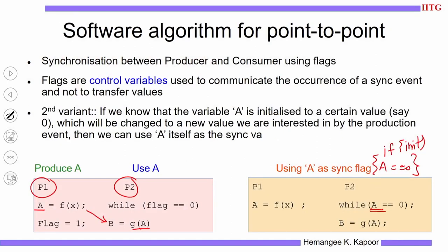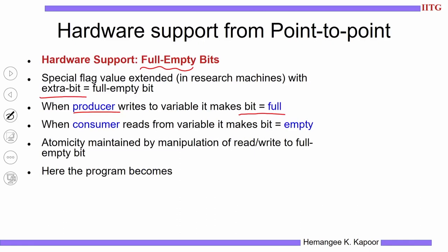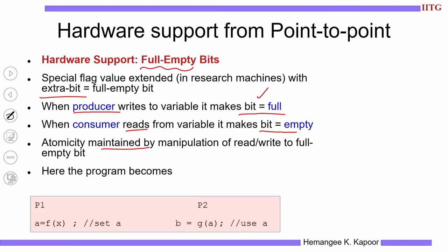When P1 executes A = F(X), a write happens to A and we make the full/empty bit equal to full. Later when the consumer reads the data item, it sets the bit to empty. The consumer process checks whether the bit is full — if empty, data is not available; if full, the data is ready to be read. You can guarantee atomicity so that exactly one process can change the value of the bit to full and empty.